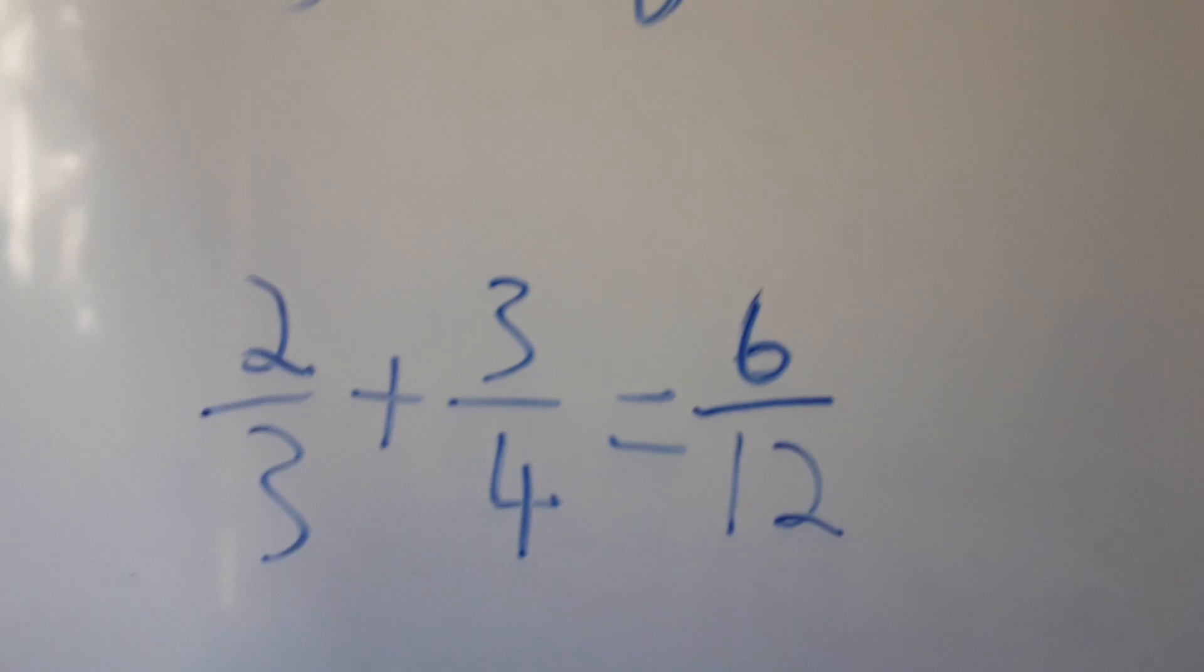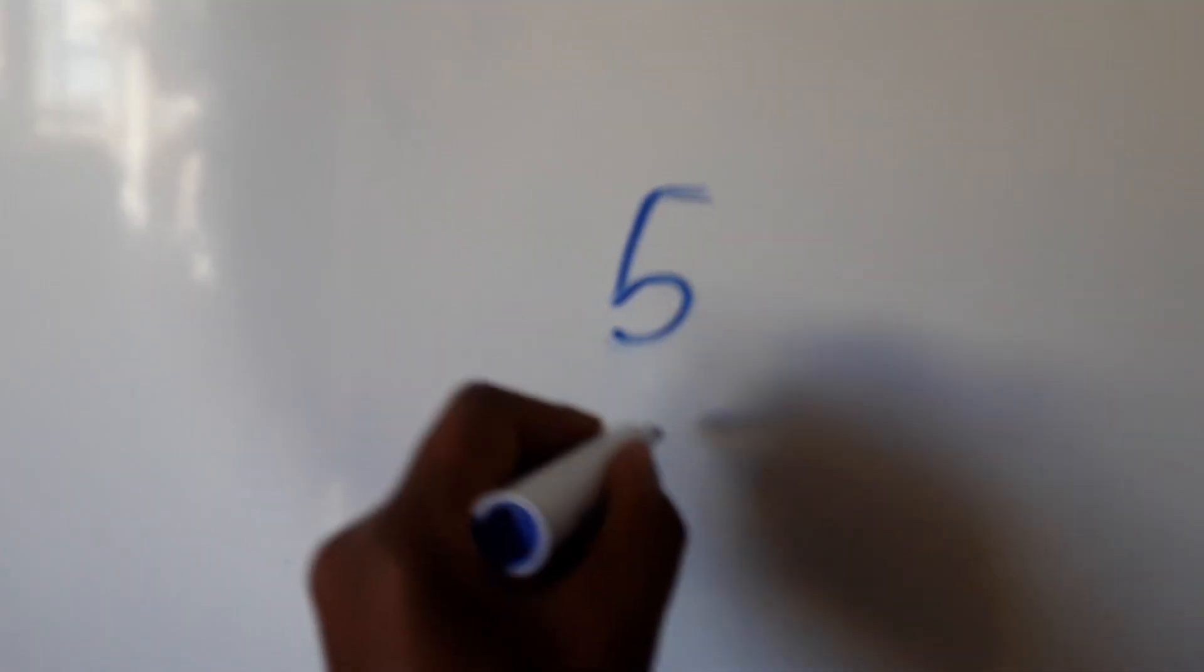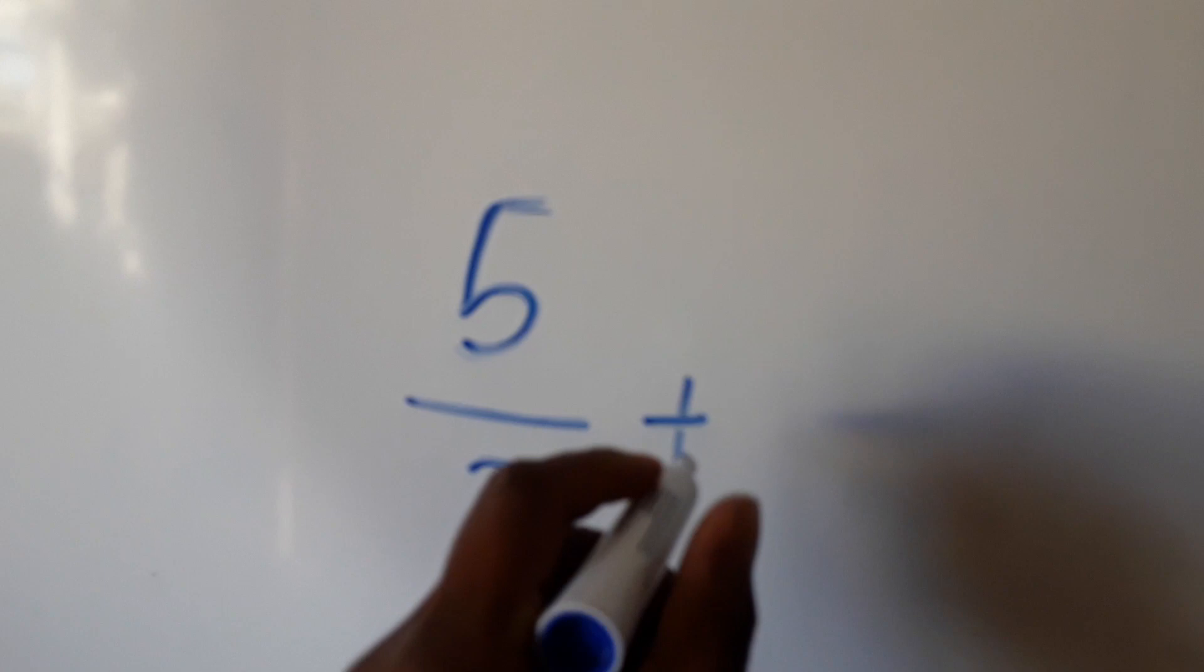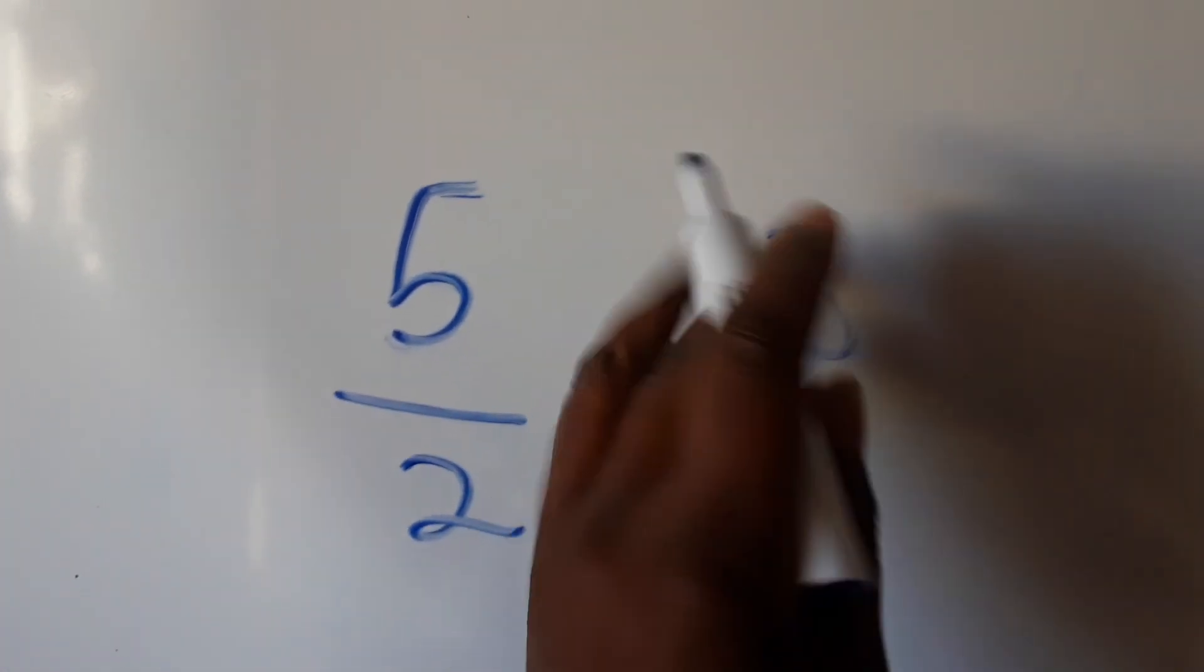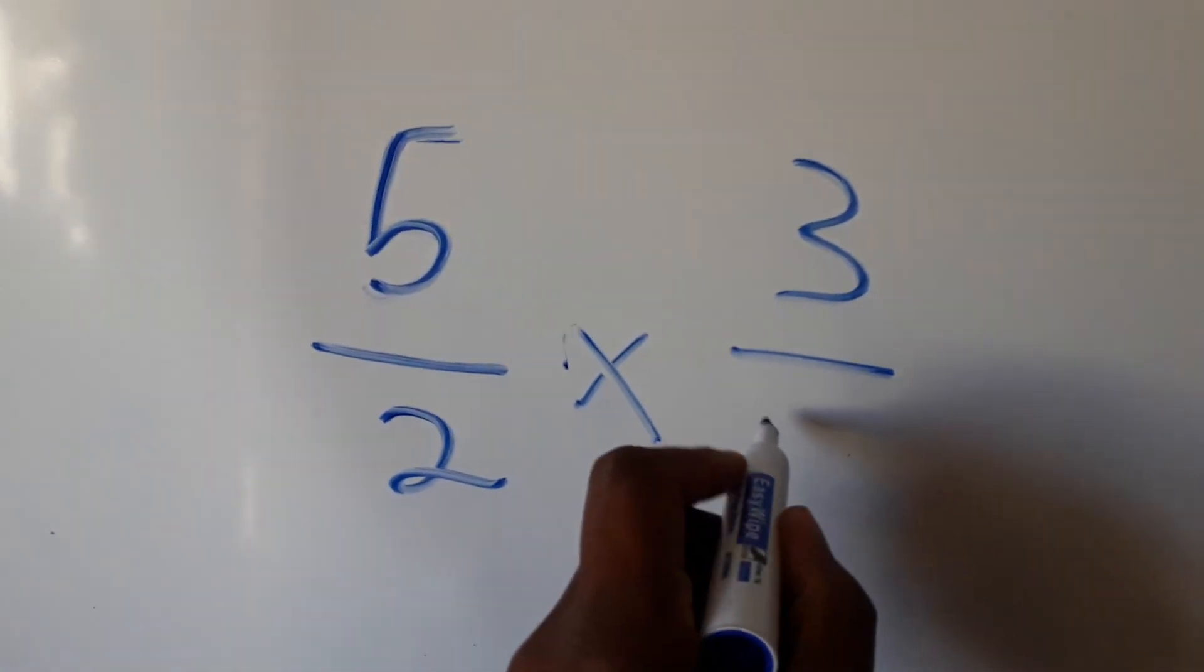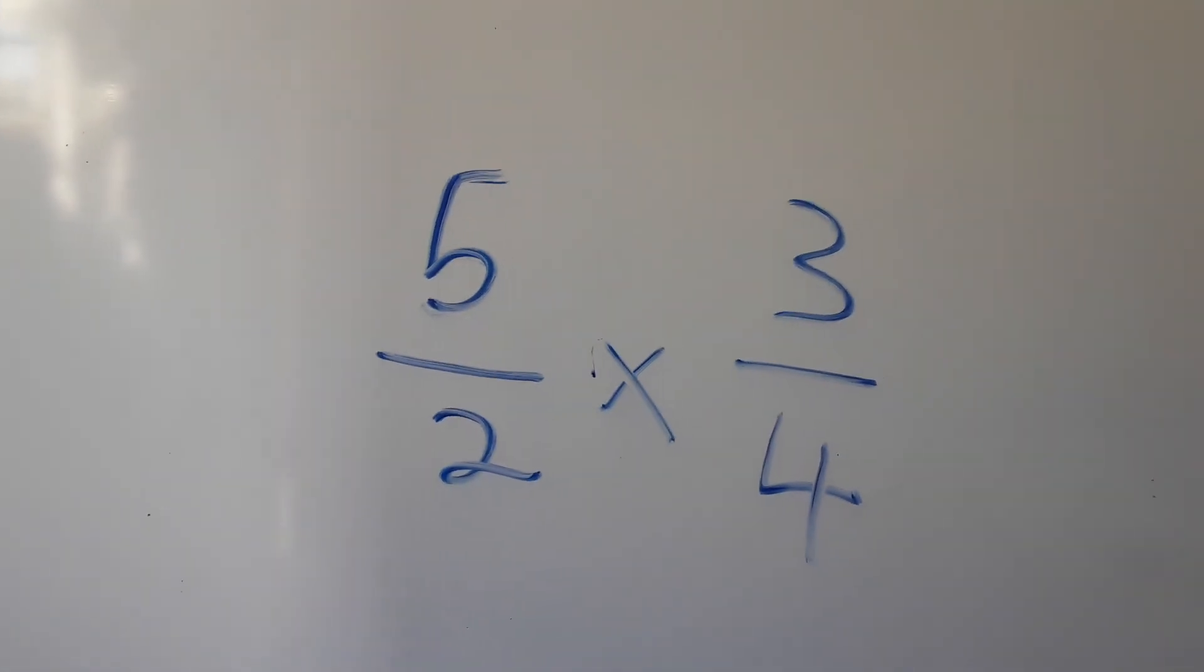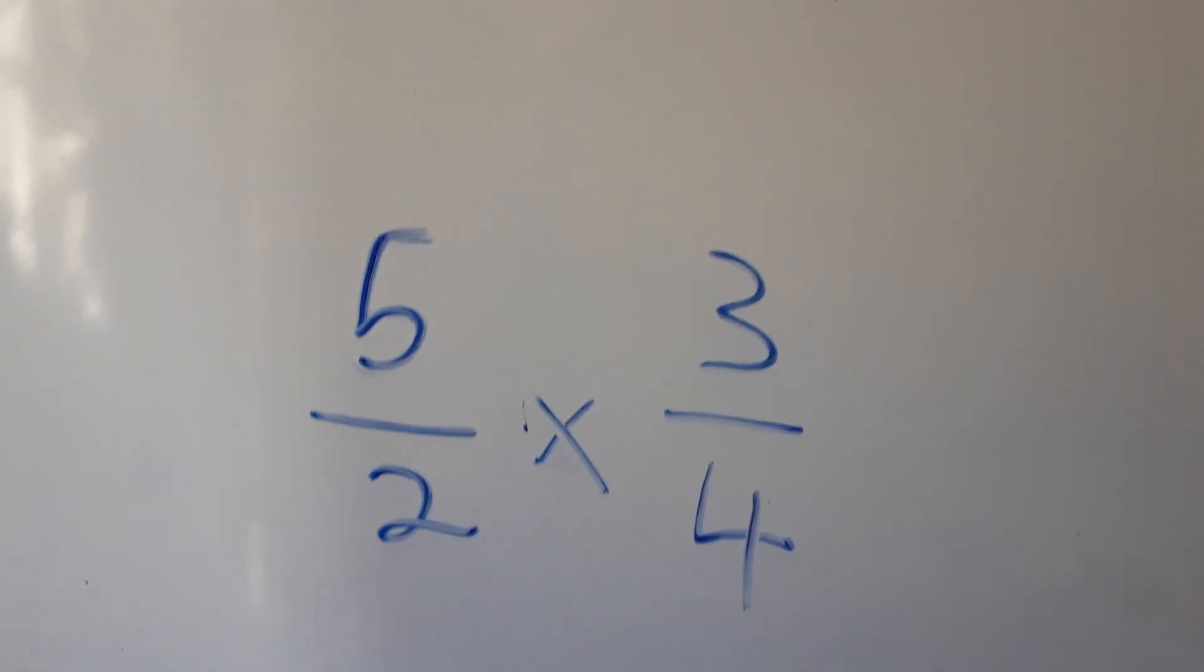I'll quickly make another example. In this example we have 5 over 2 times 3 over 4. You can try this one also to see if you understand, to check if you have an understanding of how we did this.